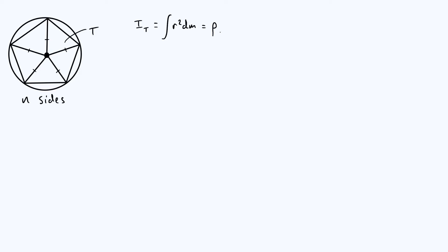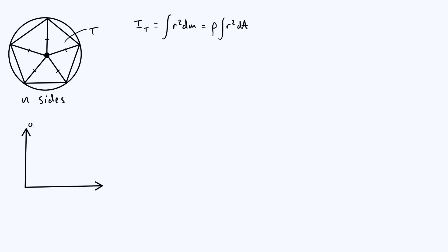You can write it in terms of an area element by taking out a factor of the density — here the area density, mass per unit area — which is rho. We're going to assume it's constant to enable us to analytically evaluate this. So it's rho times the integral of r² dA, where dA is a little area element. To actually do this integral, we're going to define a coordinate system — Cartesian coordinates, with a y-axis, an x-axis, and an origin.